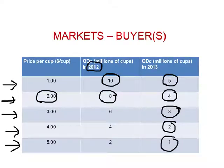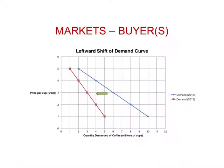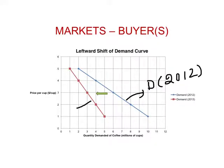So now we have information about demand in 2013 and also about demand for coffee in 2012, and at each given price, people are buying fewer cups of coffee. This diagram shows us the following: the blue demand curve was the demand curve in 2012. Now something happened and people are buying fewer cups of coffee, and so this red line indicates demand for coffee in 2013.